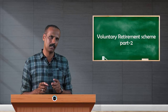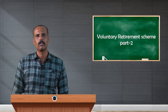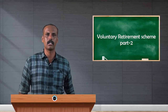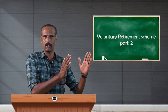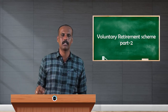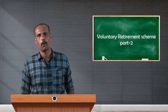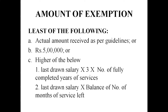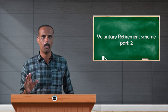Last drawn salary means the salary at the time of VRS — the salary drawn in the month before VRS. That is multiplied by three (which is standard) and then by the number of completed years of service. Completed years means only fully completed years — fractions are ignored. For example, 15 years and 7 months is taken as 15 years, and 14 years and 3 months is taken as 14 years. No fractions are counted.